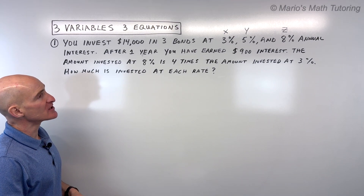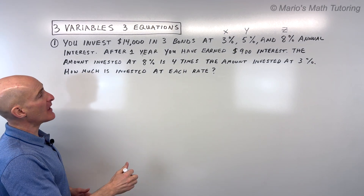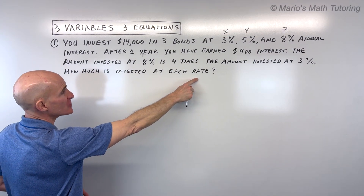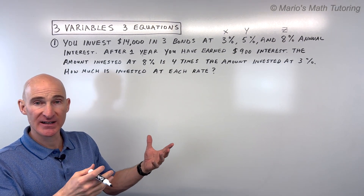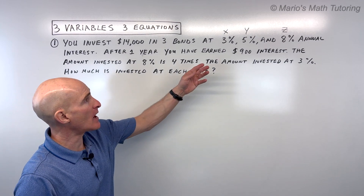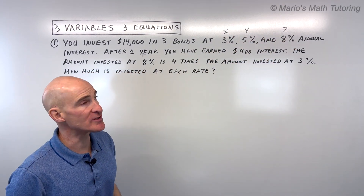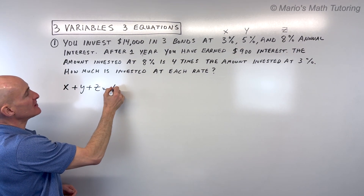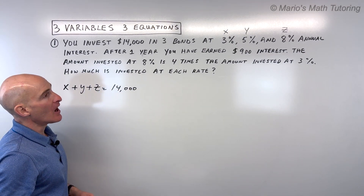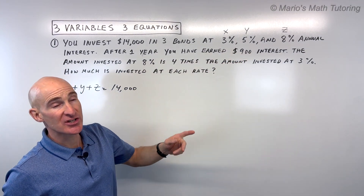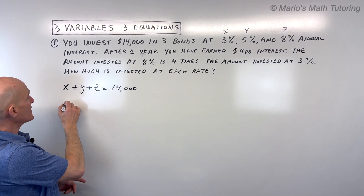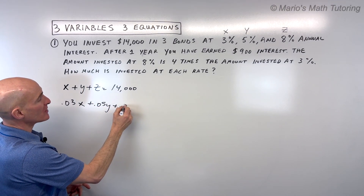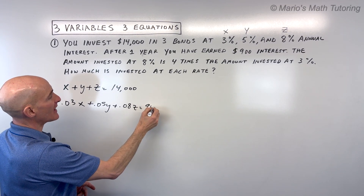The last sentence asks how much is invested at 3%, 5%, and 8%, which is why those are our X, Y, and Z unknowns. Our first equation is the total amount invested: X plus Y plus Z equals $14,000. Our next equation involves the amount of interest: 0.03X plus 0.05Y plus 0.08Z equals $900. Remember to convert percentages to decimals by moving the decimal two places to the left.